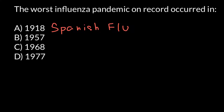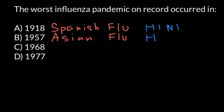Next, 1957 — we know this year as when another pandemic occurred, which we know as Asian flu. If the Spanish flu virus was caused by the virus strain we know as H1N1, the Asian flu was caused by a different strain of virus which we know as H2N2.